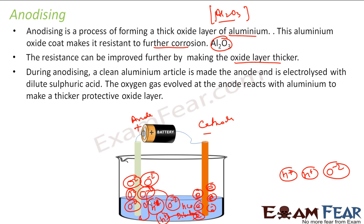Since we have more and more oxygen near the anode, this oxygen reacts with the aluminium to give Al2O3. Because the oxygen concentration is high, it gives a thicker protective layer.